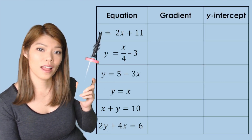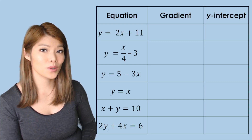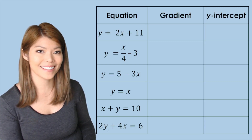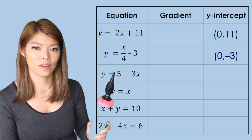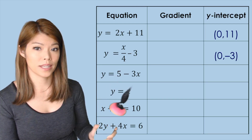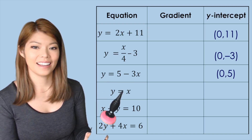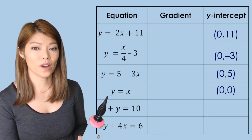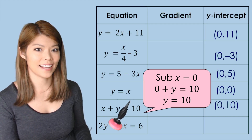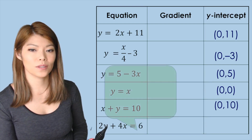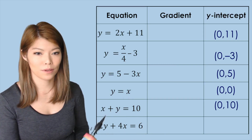Here we have a table of equations. Let's find the gradient and y-intercepts — pause the video and unpause to compare answers. For the y-intercepts: 11 gives (0, 11); negative 3 gives (0, negative 3). The value by itself here is the 5, not the negative 3 — the negative 3 is with the x — so the y-intercept is 5. The y-intercept for the next one is 0. For the next, substitute x equals 0 and get y equals 10. For the last, substitute x equals 0 into 2y equals 6 to get y equals 3.